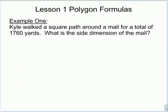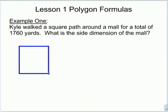Example 1. Kyle walked a square path around a mall for a total of 1,760 yards. What is the side dimension of the mall? First we're going to draw a picture — a square, because that's the shape we're looking for. Squares are made up of four equal sides.